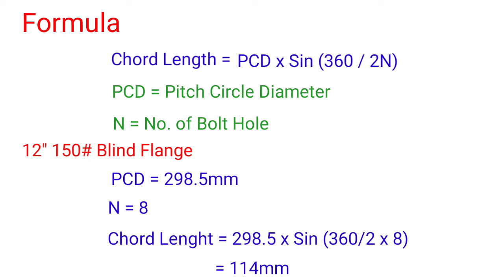So chord length equals PCD value 298.5 into sin of 360 divided by 2 into number of holes 8. So the answer is 114 mm. That is the chord length of 12 inch 150 pound blind flange.